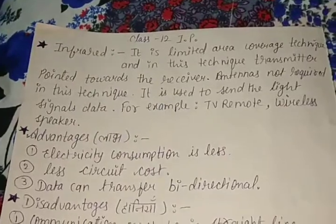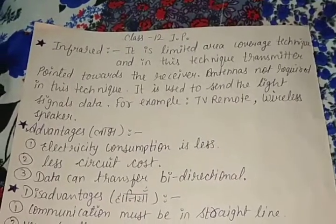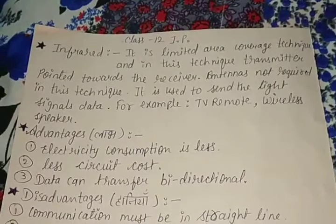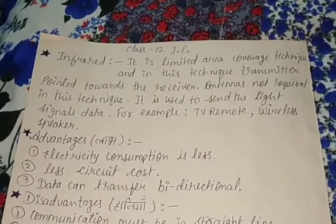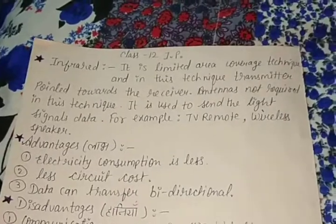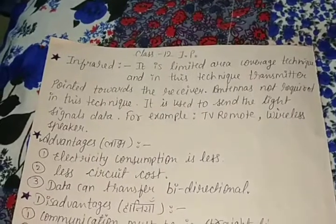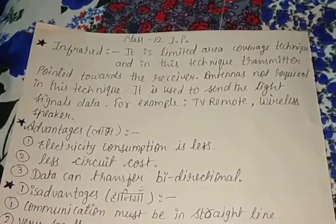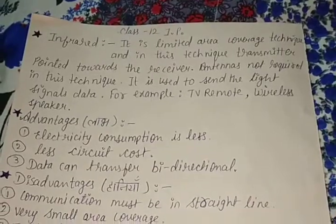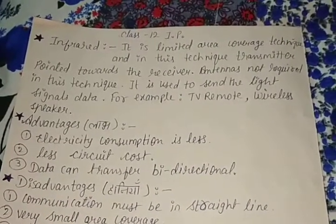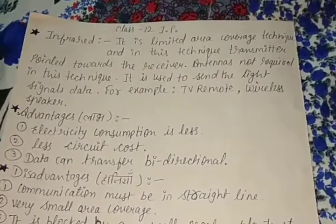To understand light signals, take the TV and remote example. When you point the remote in the direction of the TV, the remote has a small bulb — a small light source. When you press a button, the light source sends signals to the TV's light source. The transmitter is your remote and the receiver is your TV. The TV catches the signals and accordingly the channels change and the volume adjusts.